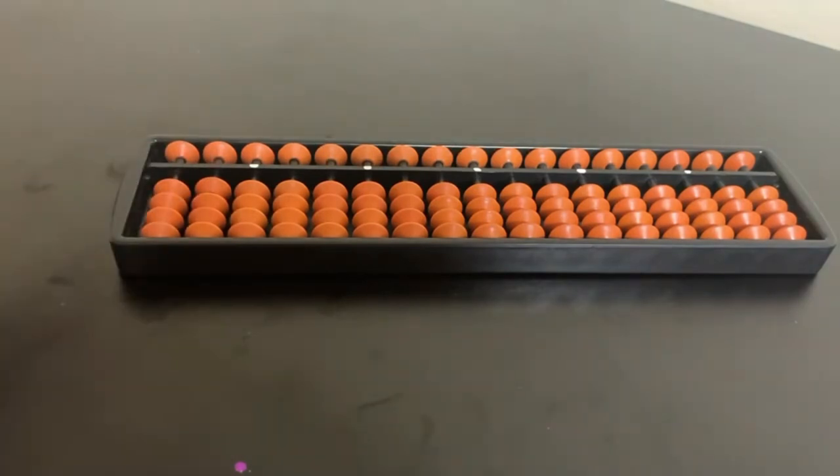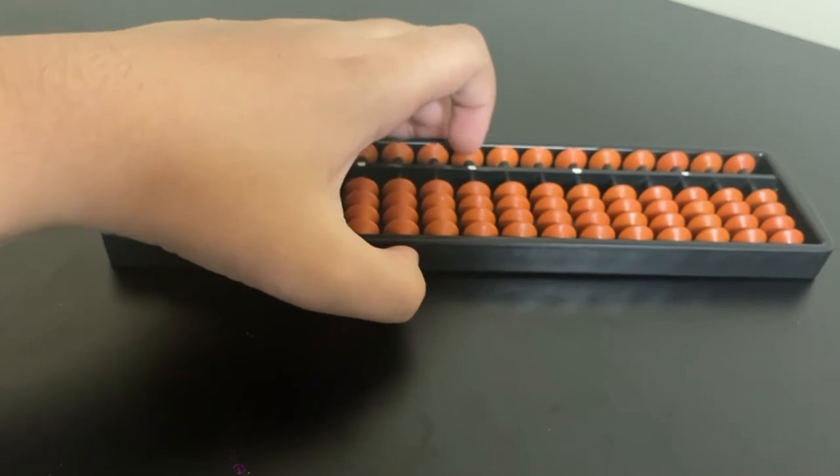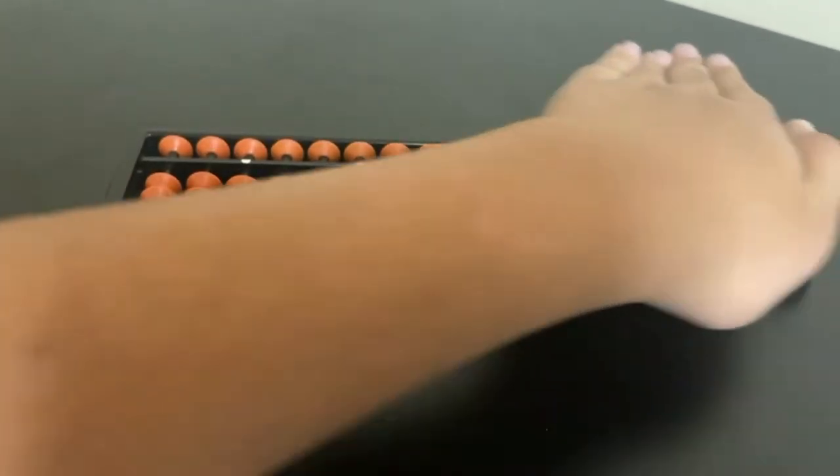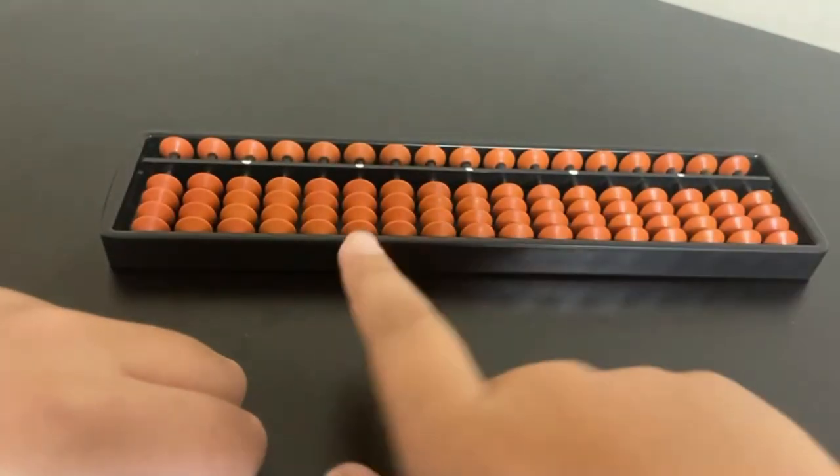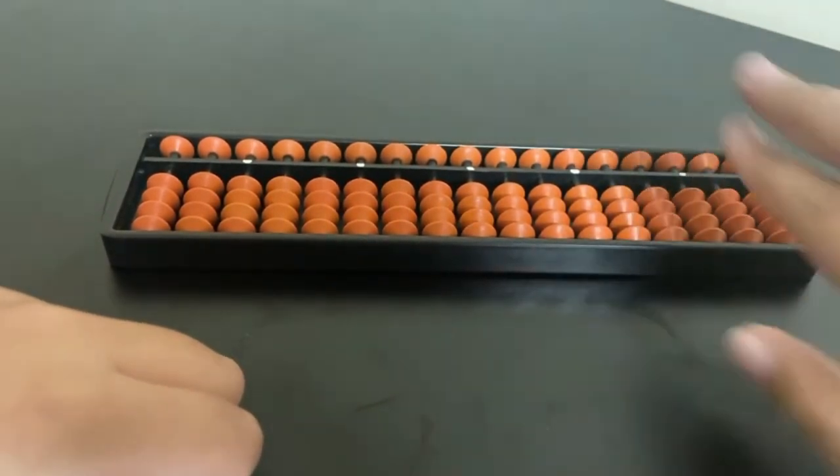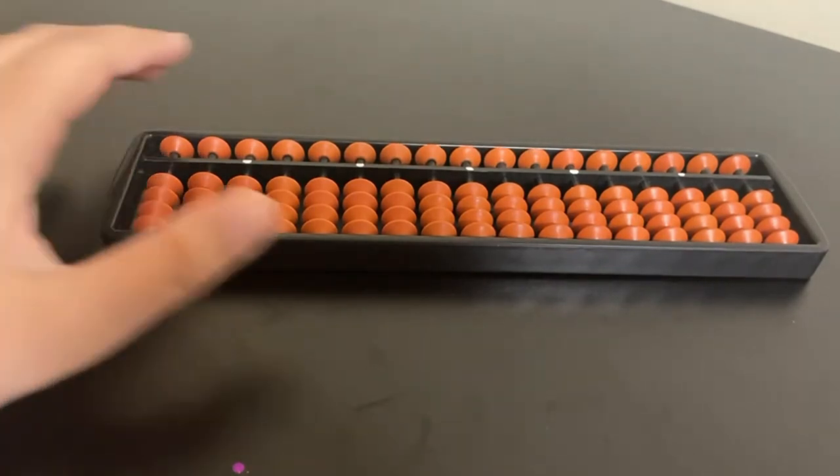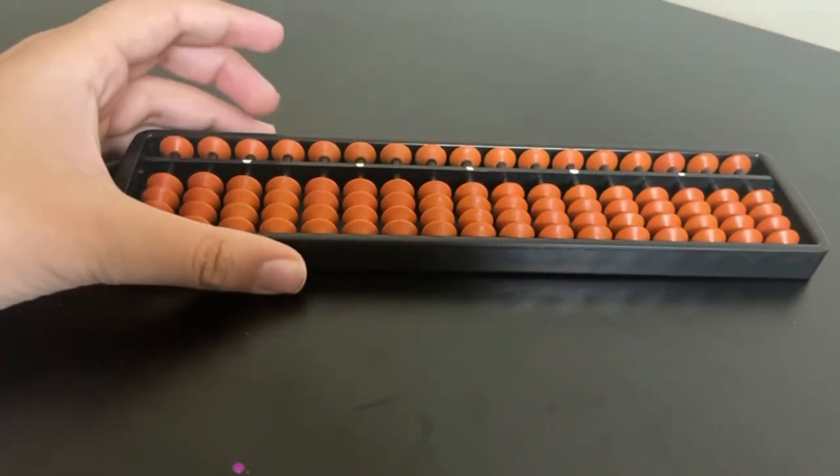This would be the home rod. Anything in front of it would be a whole number and anything behind it would be a decimal number. But we're not going to focus on the right side, we're only going to focus on the left side because these are the decimal numbers which you will need to learn in more advanced levels.